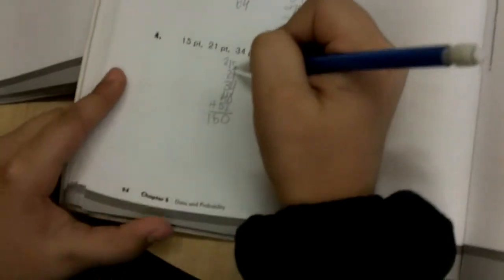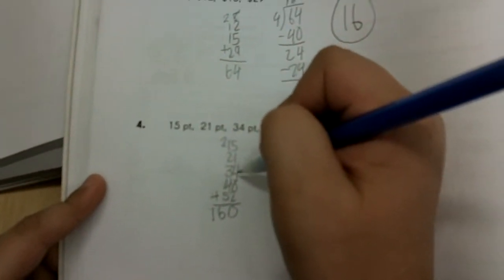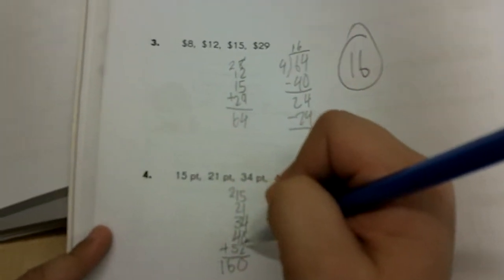I got 160, see? Because I did 5 plus 1 equals 6. 6 plus 4 equals 10. 10 plus 8 equals 18. 18 plus 2 equals 20. And then I put the 2 up there. And then 2 plus 1 equals 3. 3 plus 2 equals 5. 5 plus 3 equals 8.